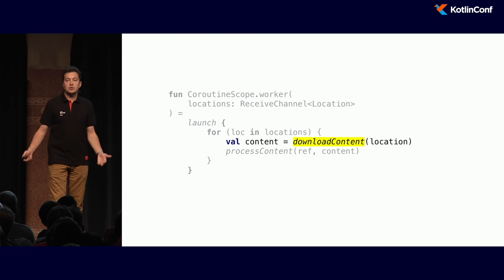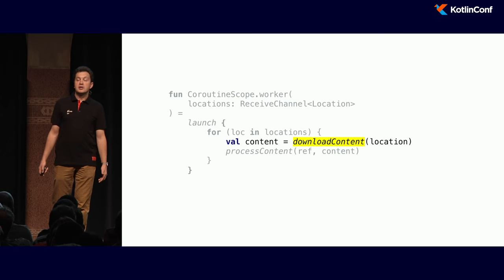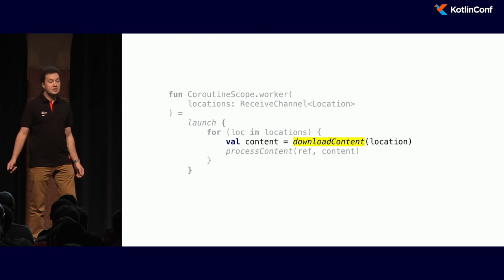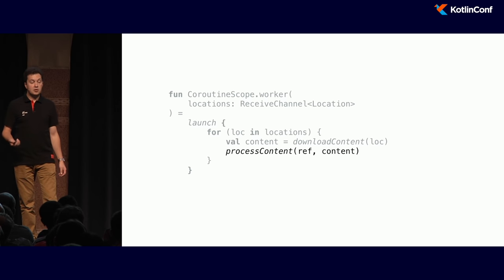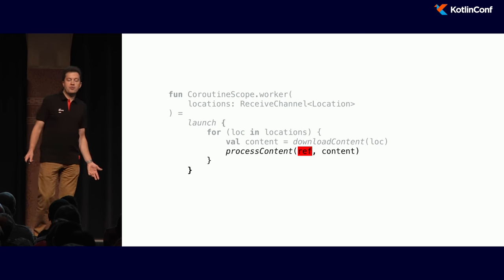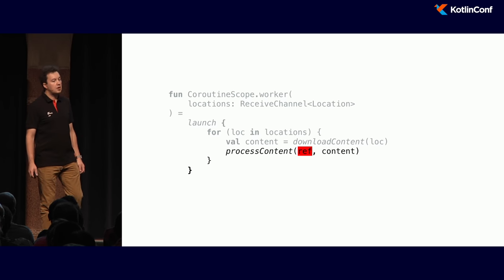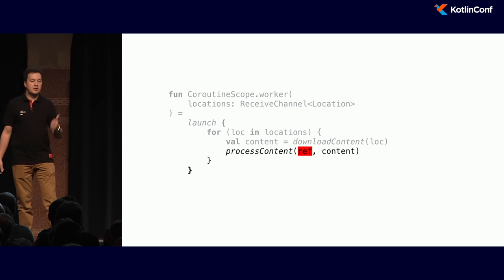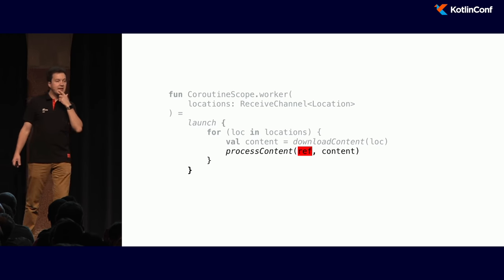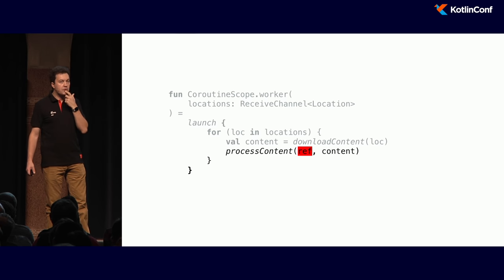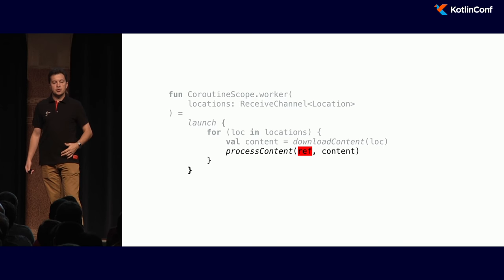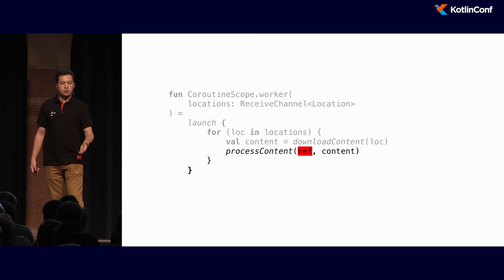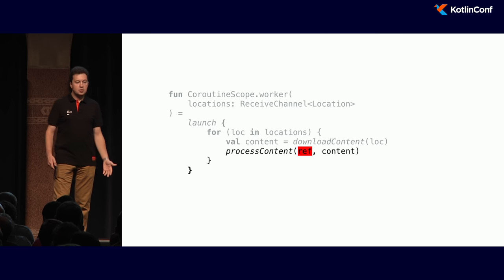Inside the worker, the code is simple — it can just invoke our suspending function to download the content from this location and process it. But here's the problem: we don't know what reference it was. We only told the worker what location to download — it doesn't know what reference triggered it, because the other coroutine was resolving references to locations. Moreover, we wanted to optimize: if multiple references resolve to the same location, we just want to download once and process results as if we did it multiple times.